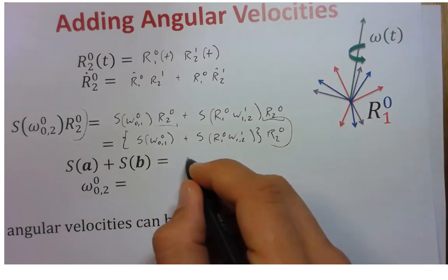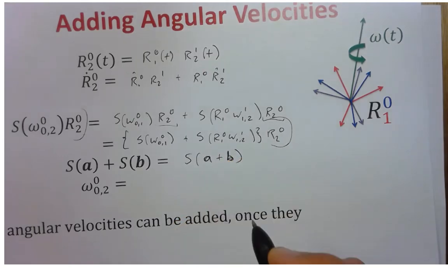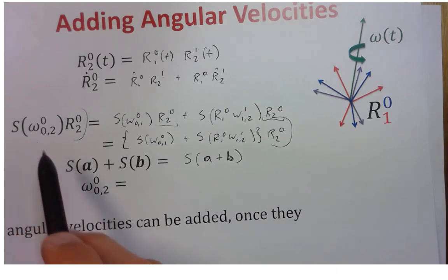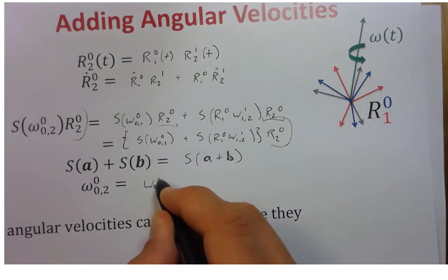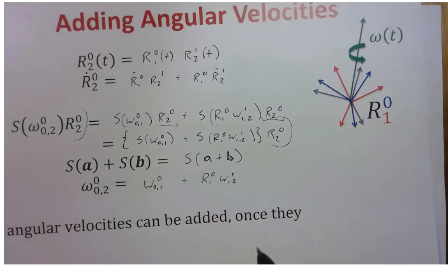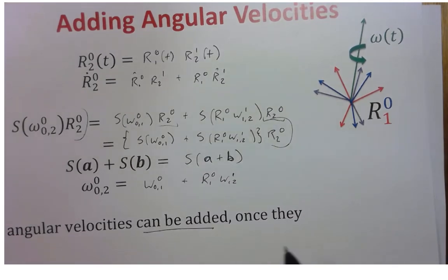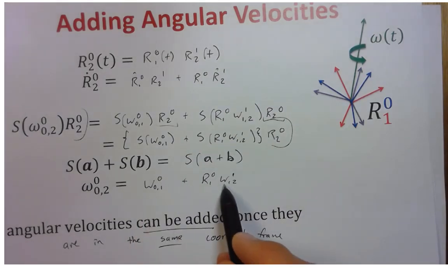By the linearity property of skew-symmetric matrices, S(A + B) means we can write omega_{0,2} in frame 0 as omega_{0,1} in frame 0 plus the rotated omega_{1,2} in frame 1. The key conclusion: angular velocities can be added, but only if they are in the same coordinate frame. You cannot add omega_{0,1} in frame 0 and omega_{1,2} in frame 1 directly — you must first rotate them into the same frame.